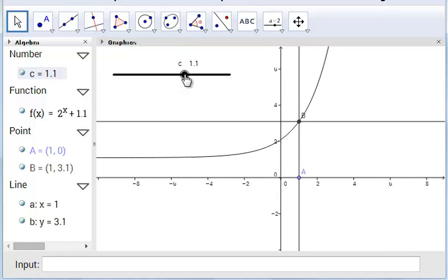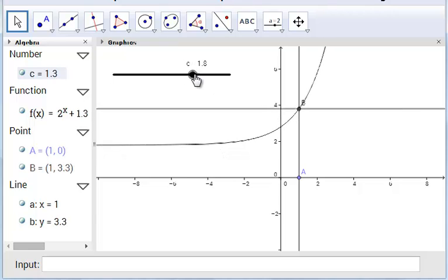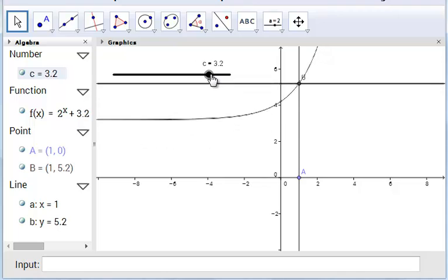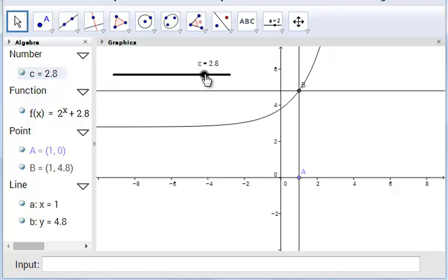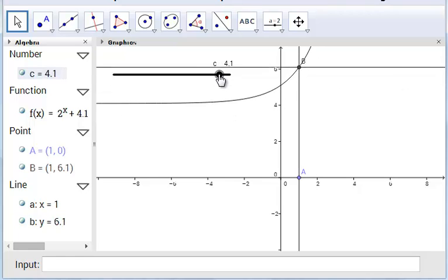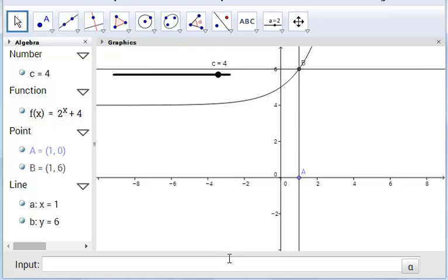If we increase c to be 1, then this is passing through at 3. If we make c 2, it's passing through at 4. When c is 3, it's passing through at 5. When c is 4, it's passing through at 5.